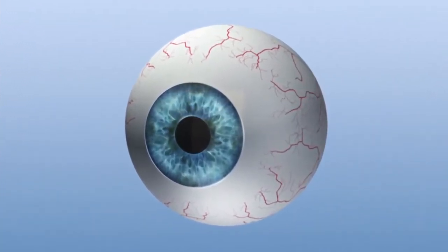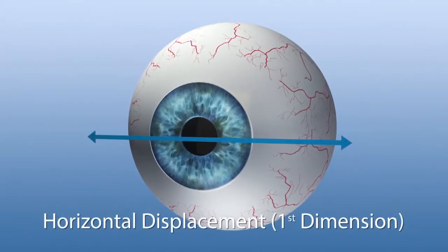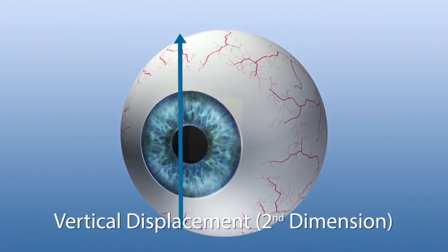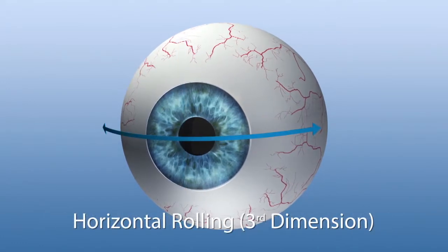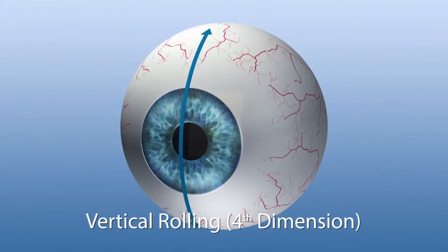Eye movements can be precisely categorized in dimensions. The first and second dimensions are lateral movements. The third and fourth dimensions are rolling movements caused by a tilting of the head or of the eye.